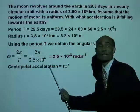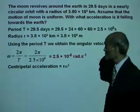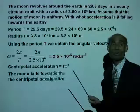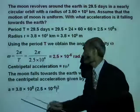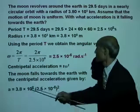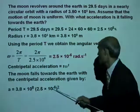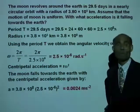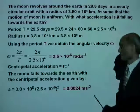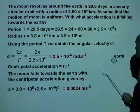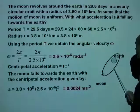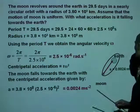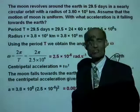Once we know omega, we can calculate the centripetal acceleration equal to r omega squared. We know the radius and we now know omega. Therefore the centripetal acceleration is r times omega squared, and that will be 0.0024 meter per second squared. The Moon goes around the Earth with a centripetal acceleration of 0.0024 meter per second squared.